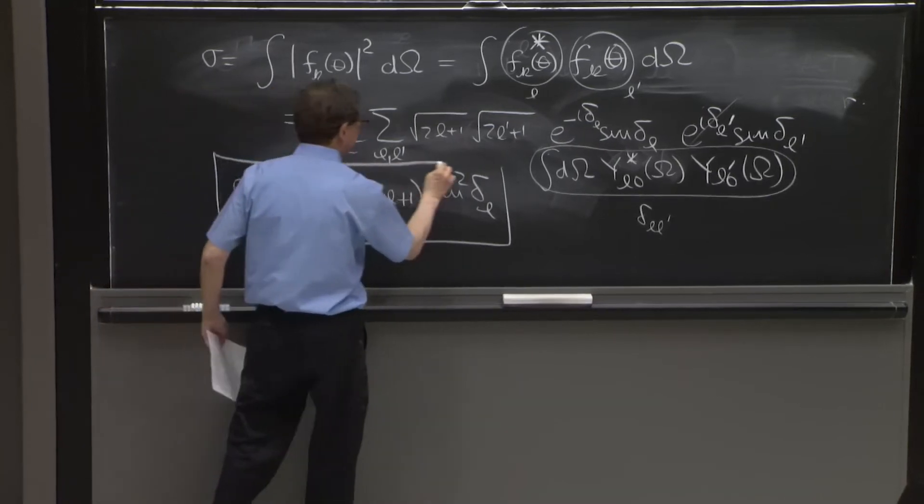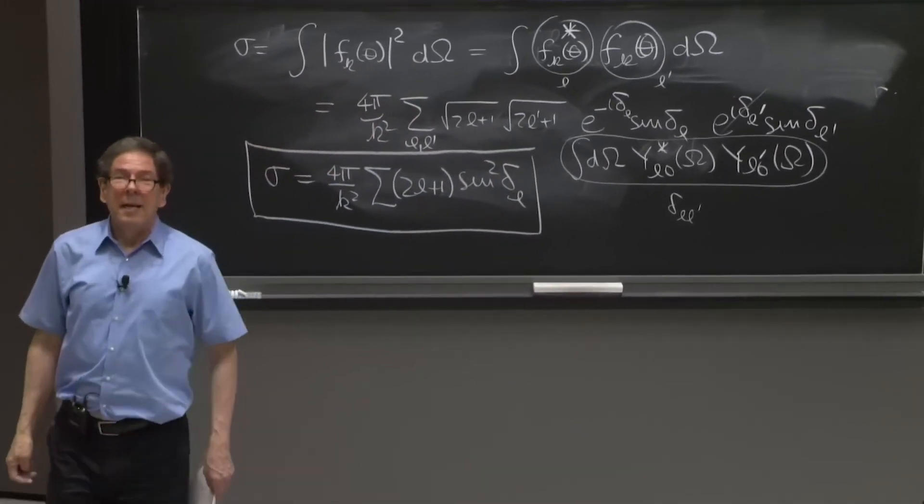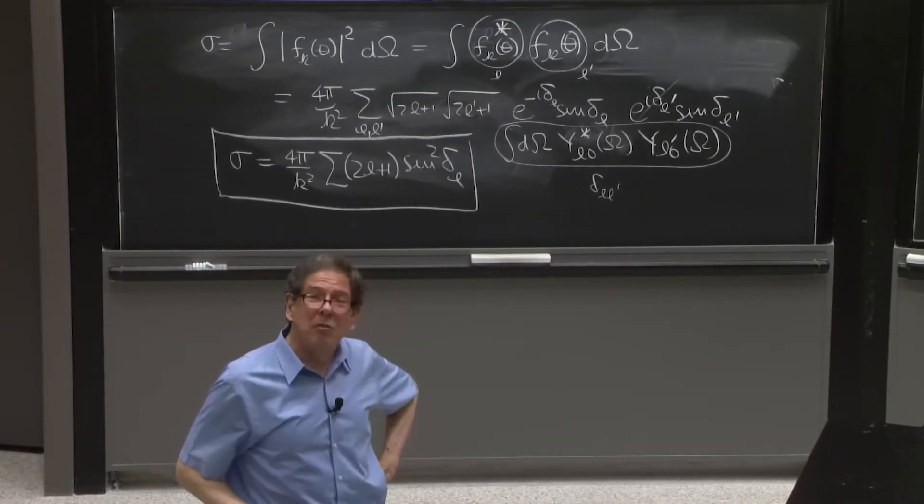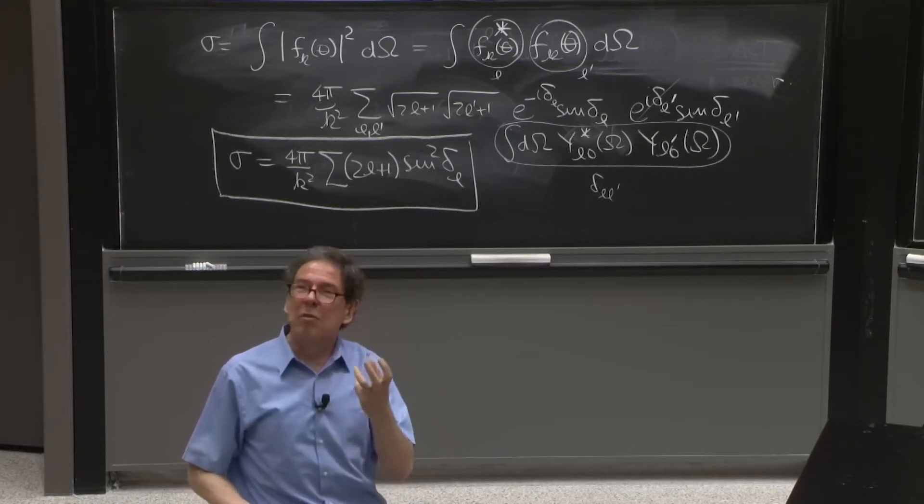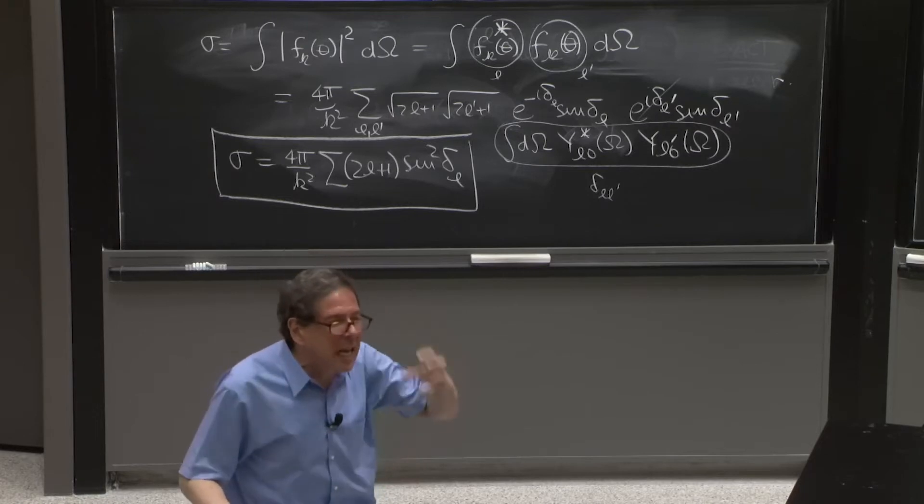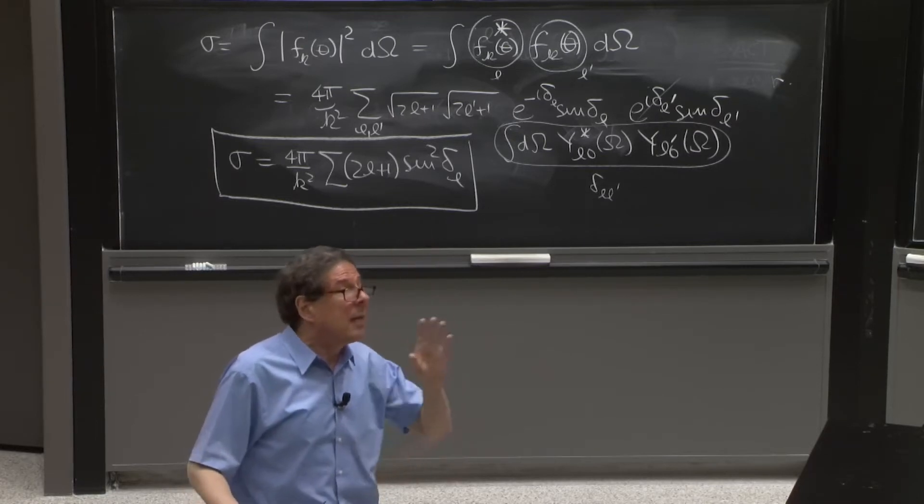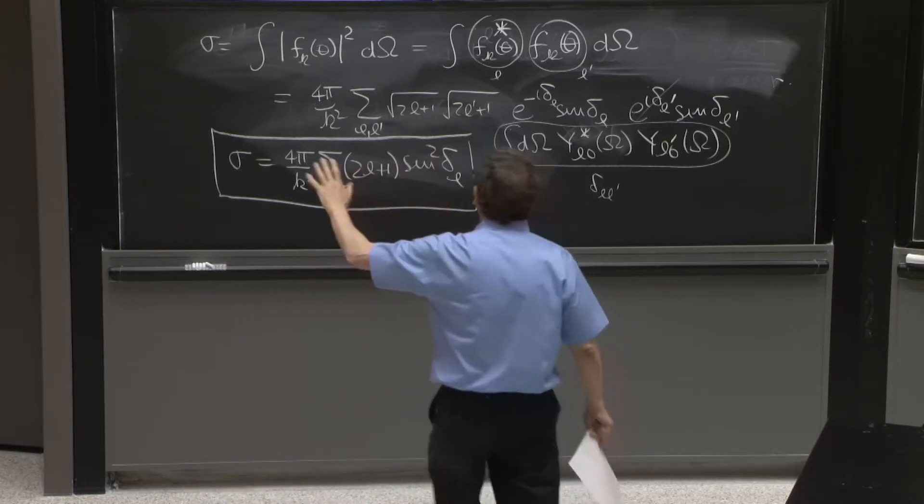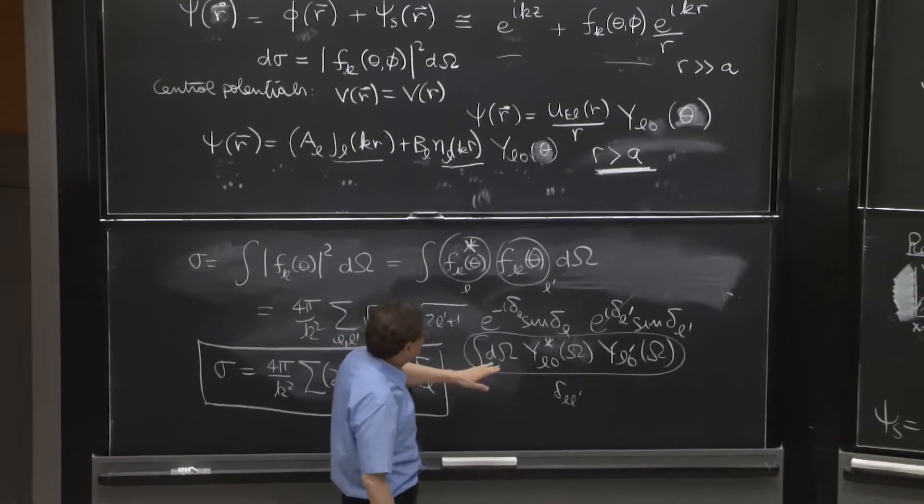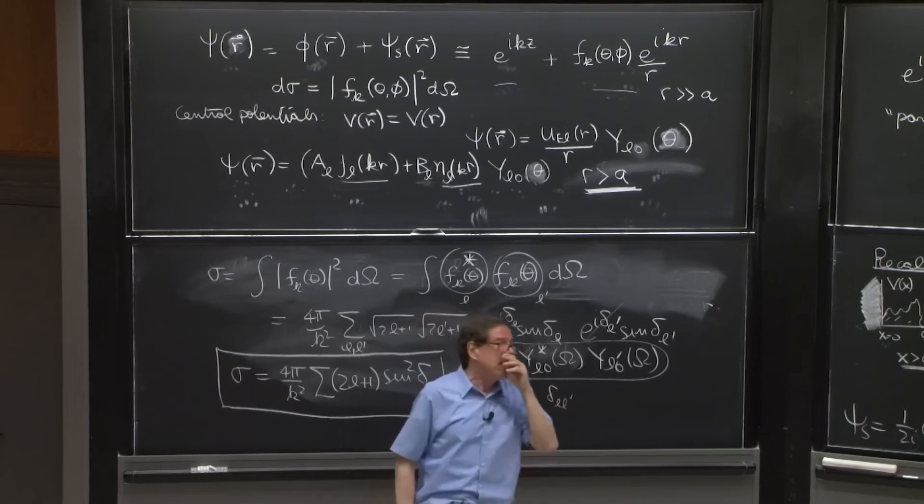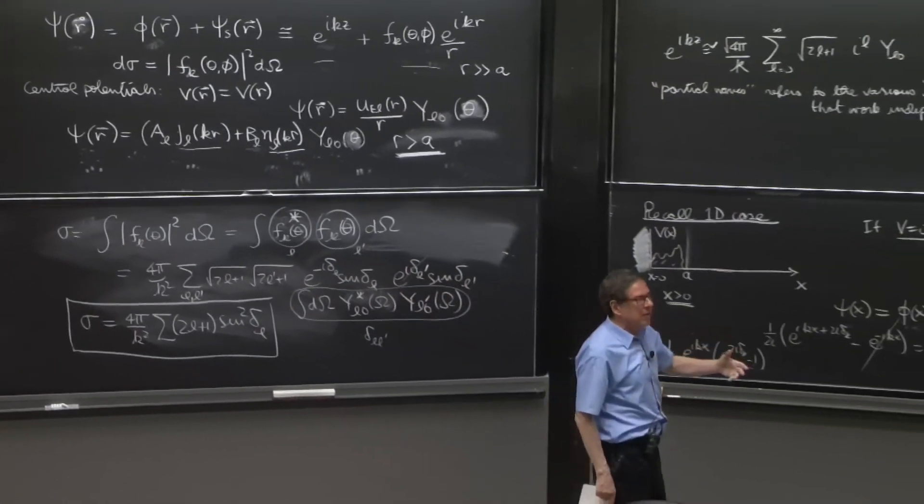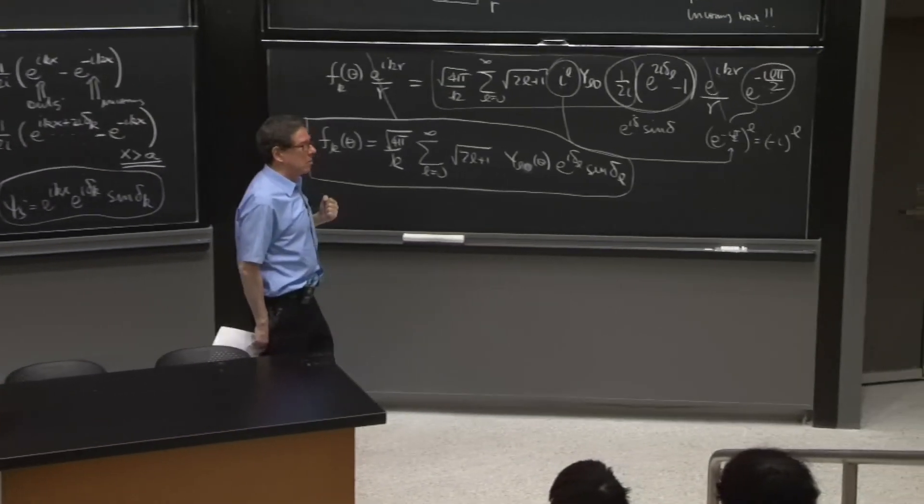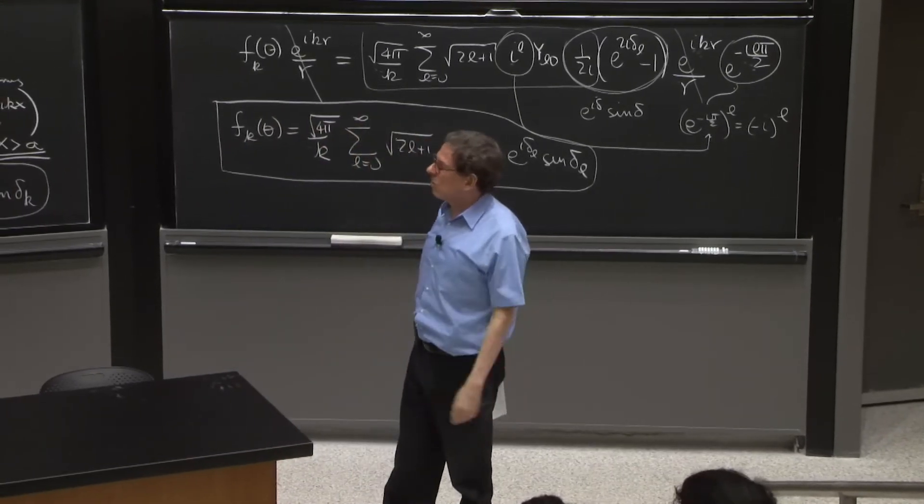Very nice formula for a physical observable. What did you get? That the cross section is the sum of contributions. The total cross section is the sum of contributions from partial cross sections from each partial wave. That's not true for the differential cross section, because in the differential cross section, you don't integrate. And as long as you don't integrate, you have mixing between different Ls. The different partial waves interfere in the differential cross section. But they will not interfere anymore in the total cross section.